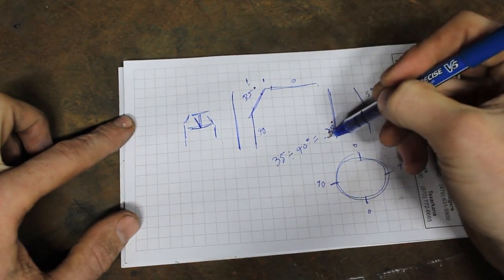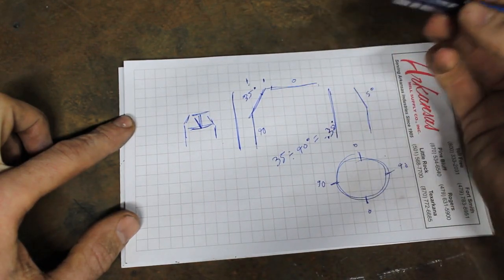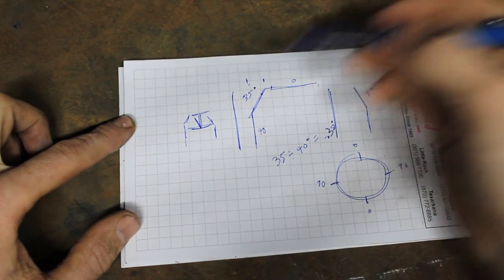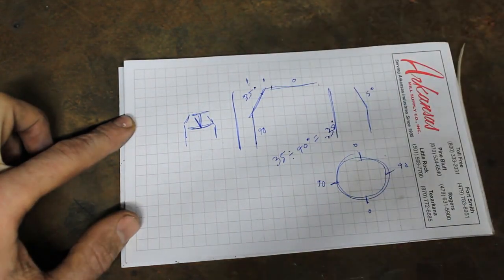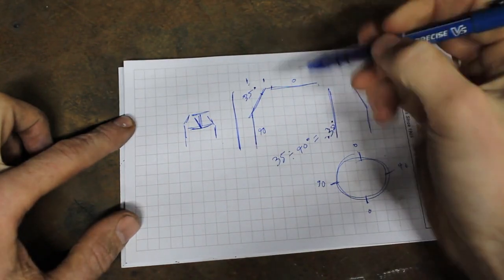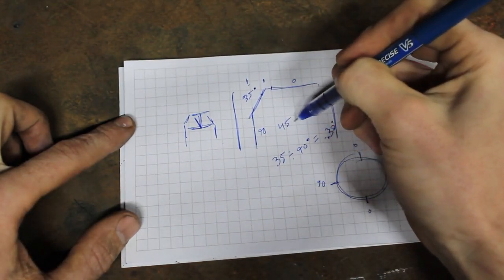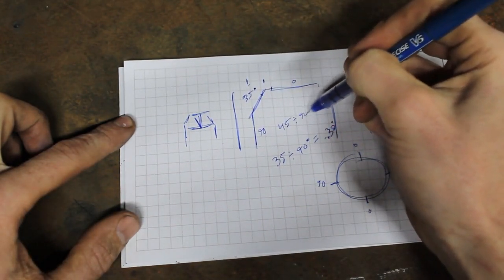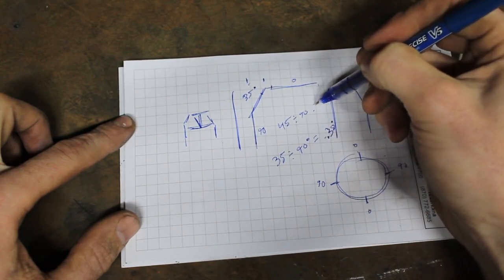So if we have a 45 degree angle here that we want to maintain, let's hypothesize that for a moment. We do 45 divided by 90 and we get 0.5.